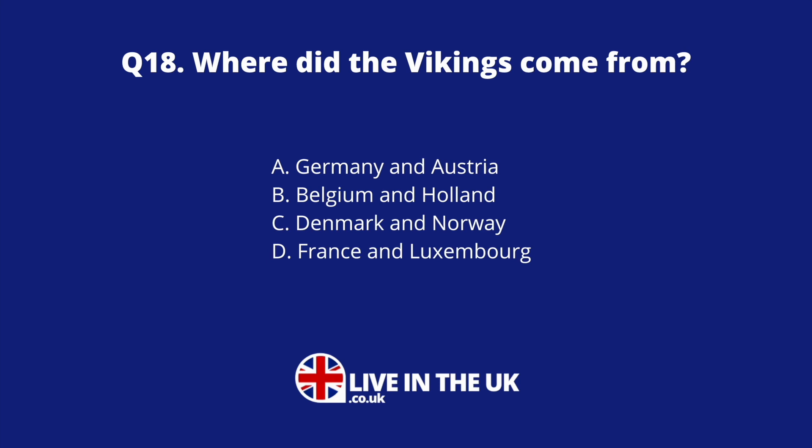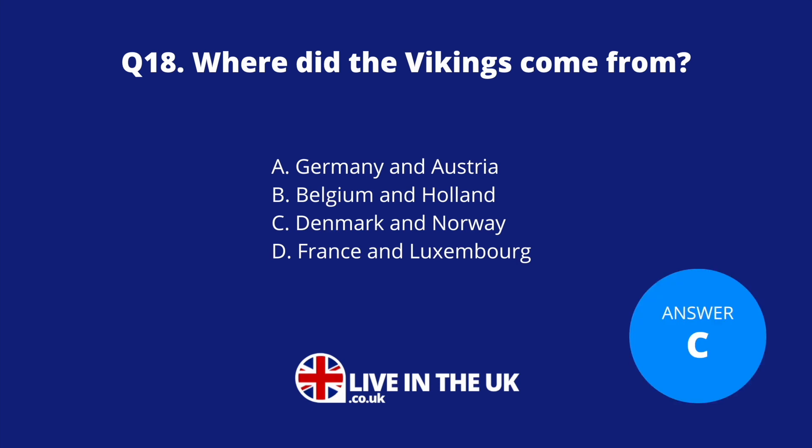Question eighteen: Where did the Vikings come from? Was it Germany and Austria, Belgium and Holland, Denmark and Norway, or France and Luxembourg? The answer is C — Denmark and Norway.